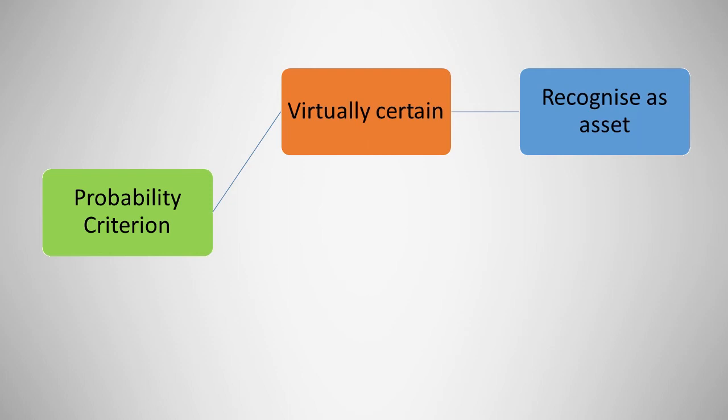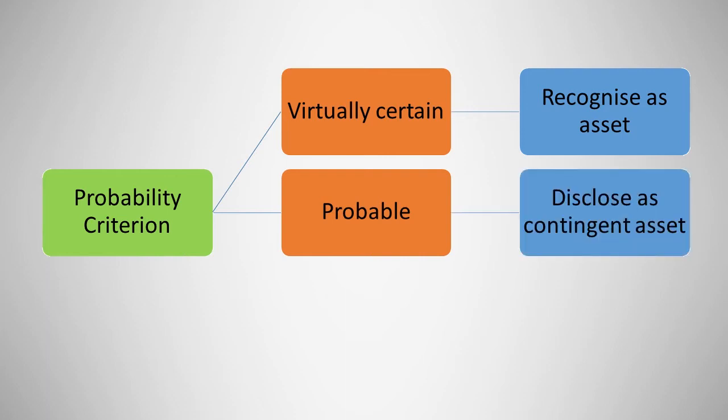The second classification is probable. This means that the flow of economic benefits are likely but less than virtually certain. If this classification is applicable, disclosure of the contingent asset is required.